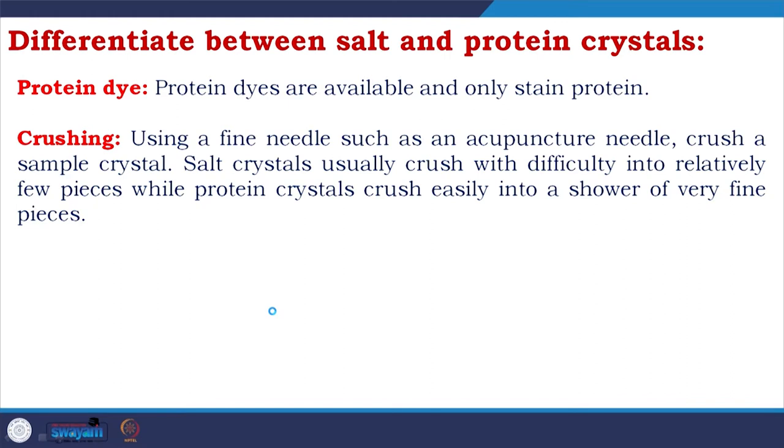Crushing: using a fine needle such as an acupuncture needle, crush a sample crystal. Salt crystals usually crush with difficulty into relatively few pieces, while protein crystals will crush easily into a shower of very fine pieces. Remember, protein crystals have a lot of solvent channels, so they are soft — not like the crystal you imagine, not like a diamond. A salt crystal is very compact and hard; if it is a protein crystal, it is soft.